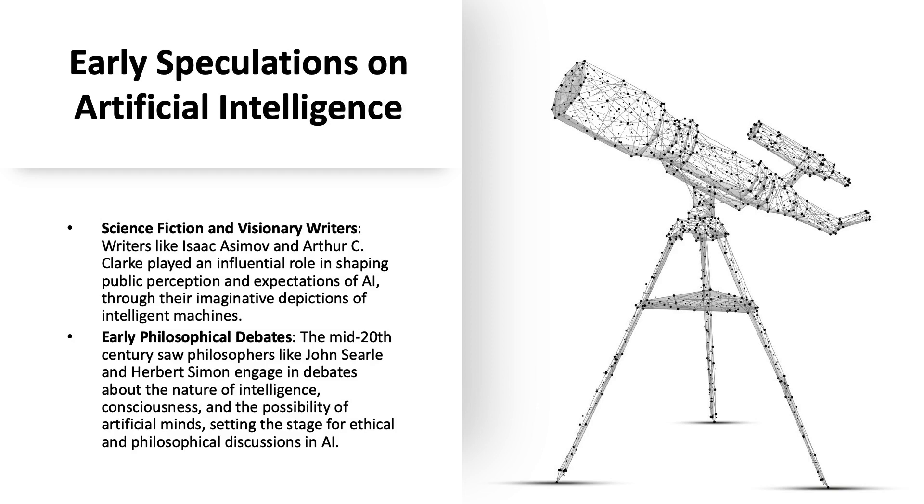Herbert Simon, a polymath and one of the pioneers in AI research, held a more optimistic view of AI's potential. He was instrumental in developing early AI programs and theories contributing to the understanding of problem solving, decision-making, and these types of processes in machines. These early philosophical debates set the stage for ongoing ethical and philosophical discussions in AI, addressing questions about the nature of intelligence and the ethical implications of such achievements.